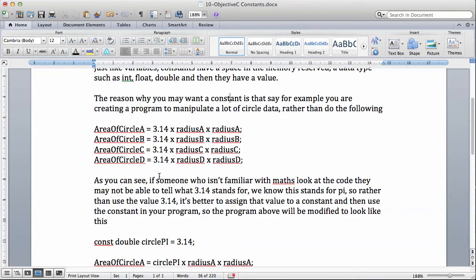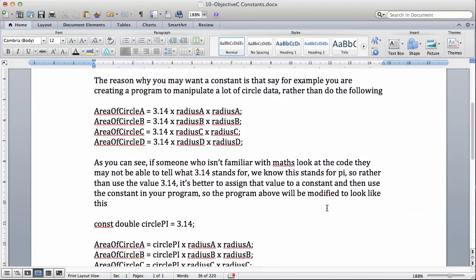As you can see, if someone who isn't familiar with maths looks at the code, they may not be able to tell what 3.14 stands for. We know this stands for pi, so rather than use the value 3.14, it's better to assign that value to a constant and then use the constant in your program, so the program above will be modified to look like this.